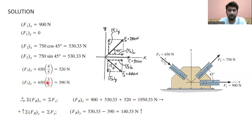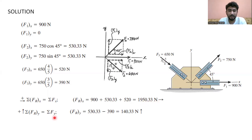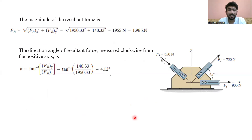For the resultant horizontal force, we add all the horizontal components: 900 newtons from F1, plus 530.33 newtons from F2, plus 520 newtons from F3, giving a resultant horizontal force of 1950.33 newtons. For the resultant vertical force, we get 140.33 newtons.